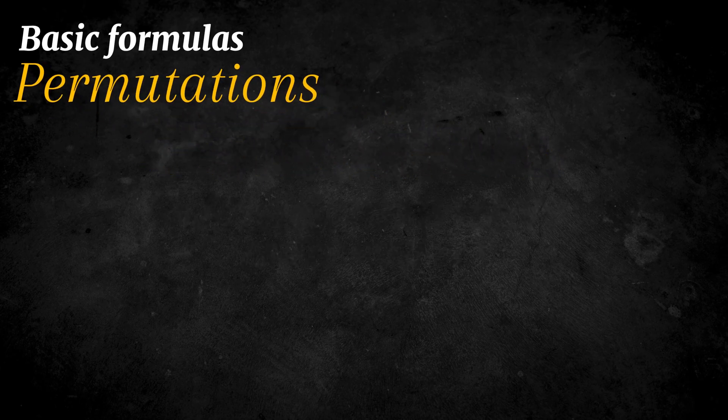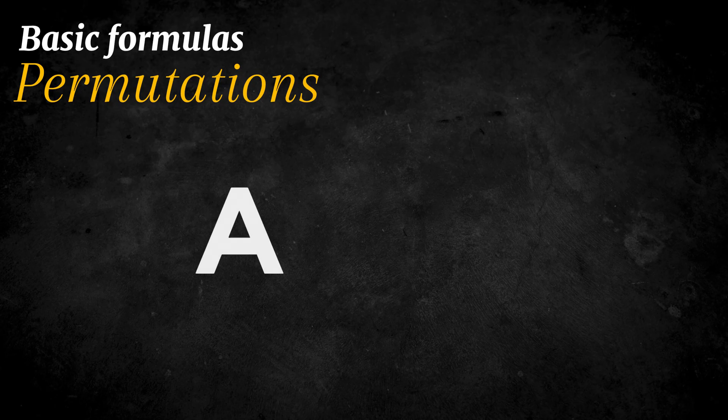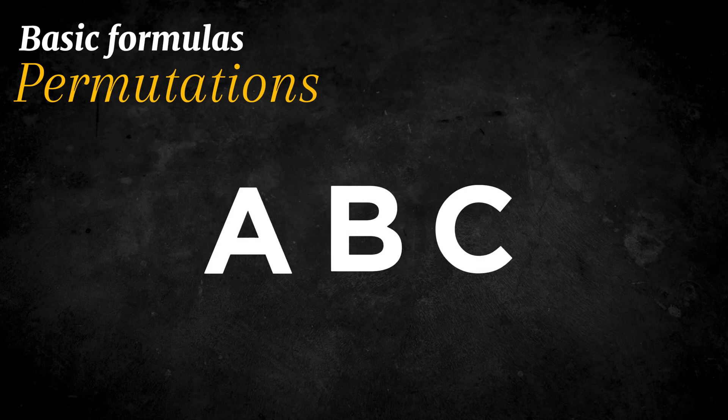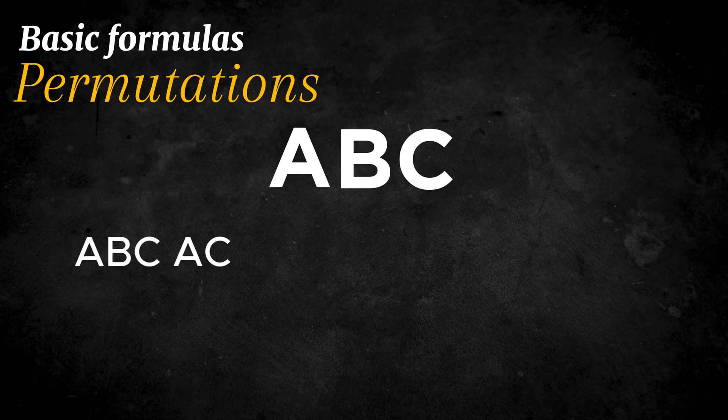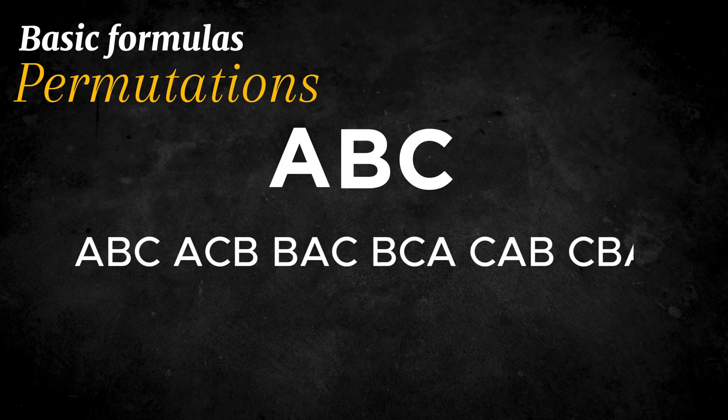For example, suppose you have three letters A, B, and C. The different ways you can arrange all three letters are ABC, ACB, BAC, BCA, CAB, and CBA. There are six arrangements in total.